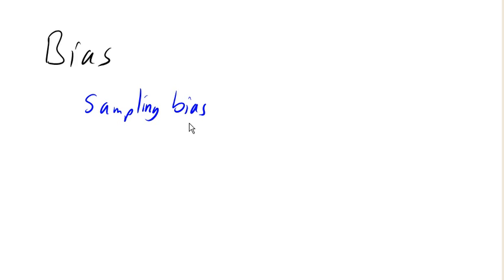Sampling bias is what you get when your sample is not actually representative of your population. The data from this sample can't really be trusted — it's distorted because it is not representing the population that you're actually trying to talk about.